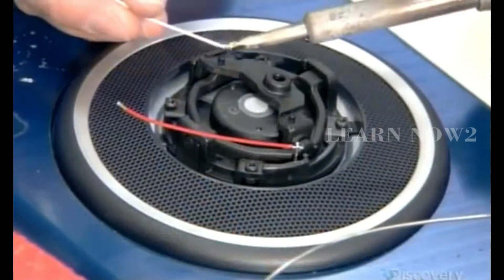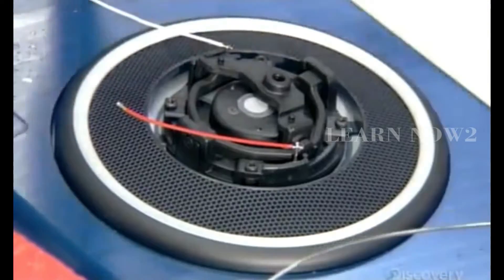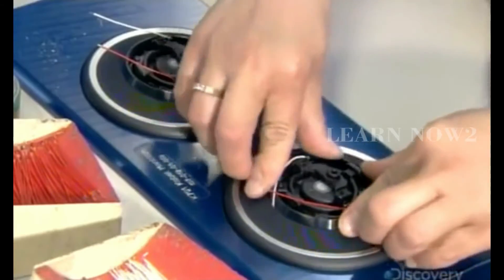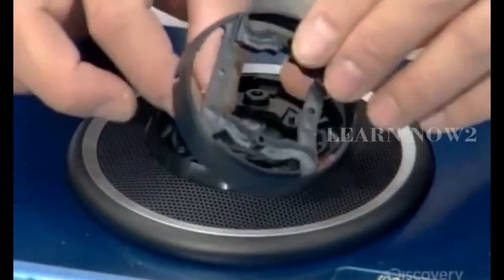Next, she solders two wires to each headphone speaker. A plastic ring and cover protect it while still allowing the wires to protrude.